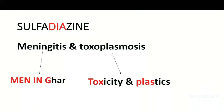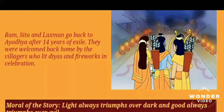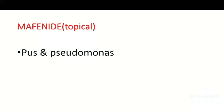For toxoplasmosis with sulfadiazine: in olden times, Diwali was celebrated with lights and sweets. But in modern times, people misuse Diwali with crackers and bombs causing toxicity and pollution — 'toxoplasmo-sis' reminds you of that toxicity and plastics. So from the Diwali story, remember sulfadiazine for both meningitis and toxoplasmosis. Finally, mafenide is a topical sulfonamide used for pus and Pseudomonas. Usually sulfonamides are not strong against these, but mafenide as a topical agent is used for pus and Pseudomonas. Thank you for watching.